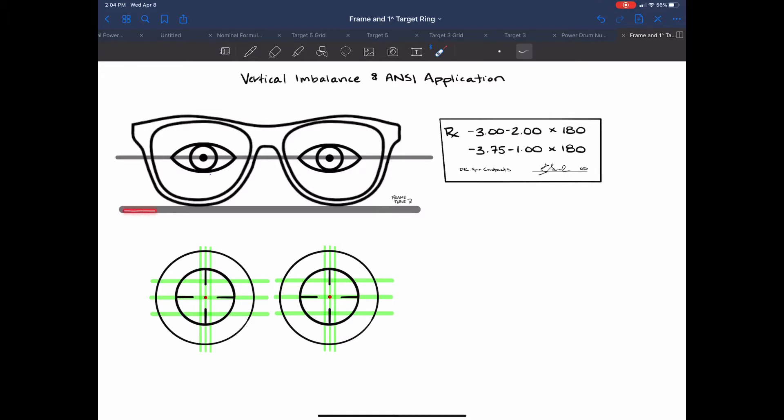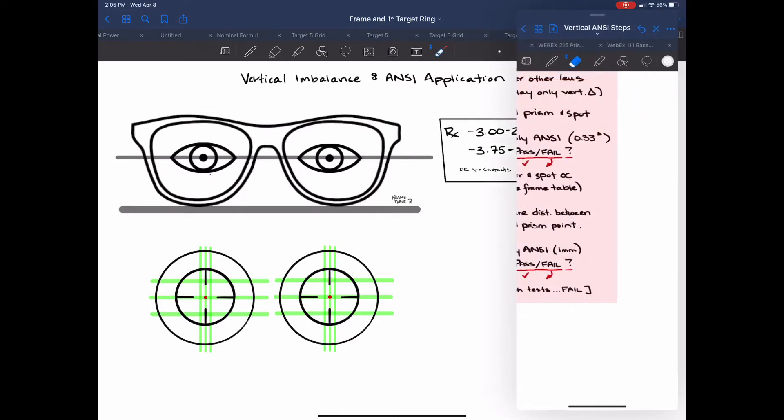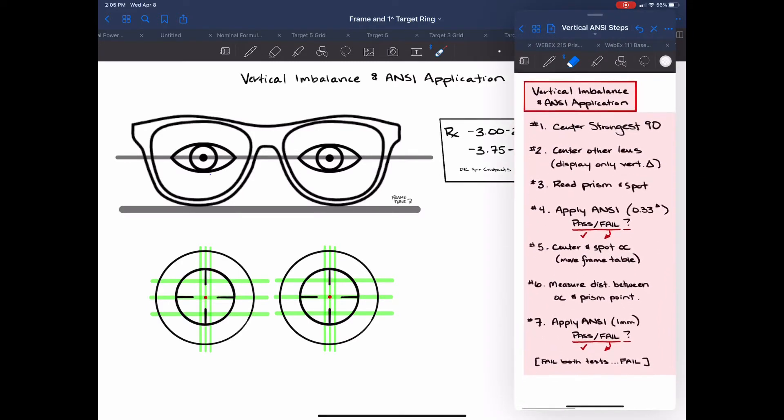One of the stipulations is that once we line up the one lens and then we go to center the other one we cannot move the frame table and that's how we're going to be able to know that we have vertical imbalance amount. So first things first let's reference our instruction list.